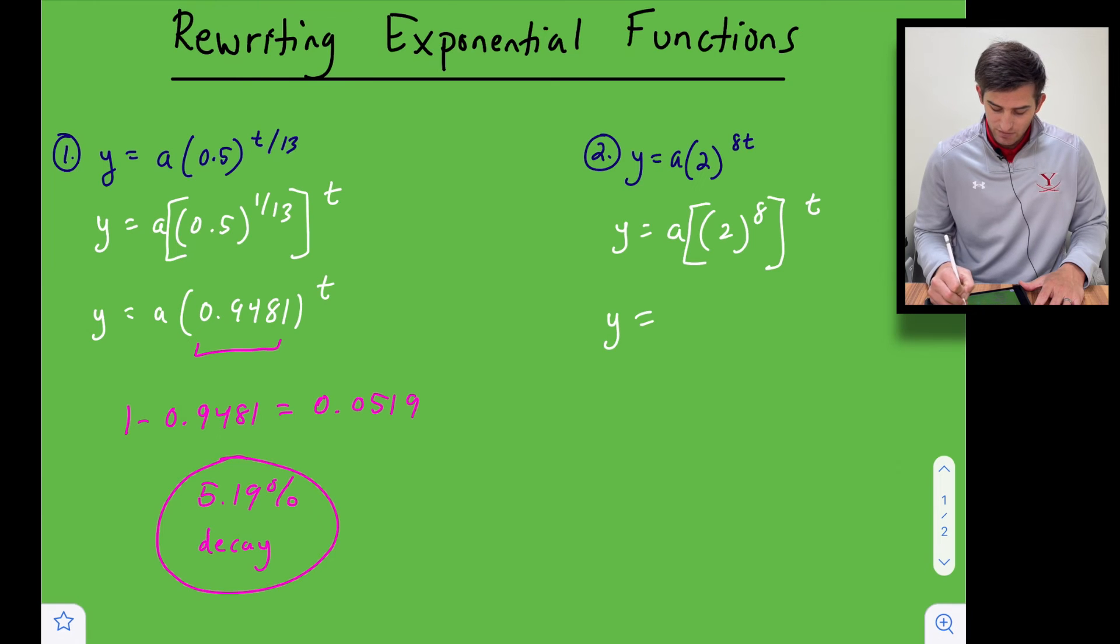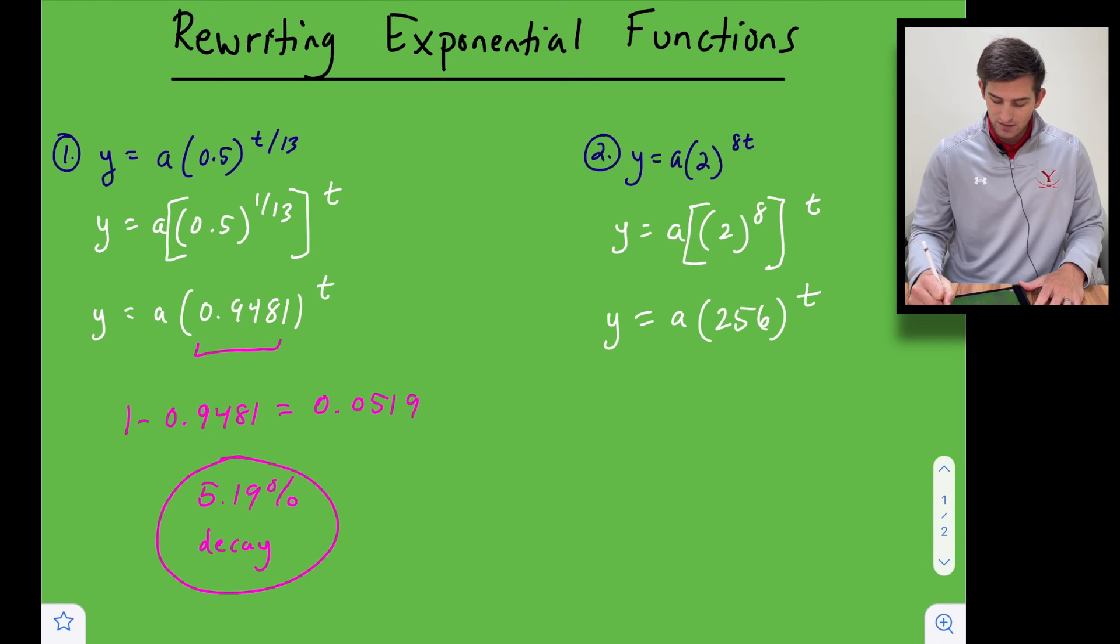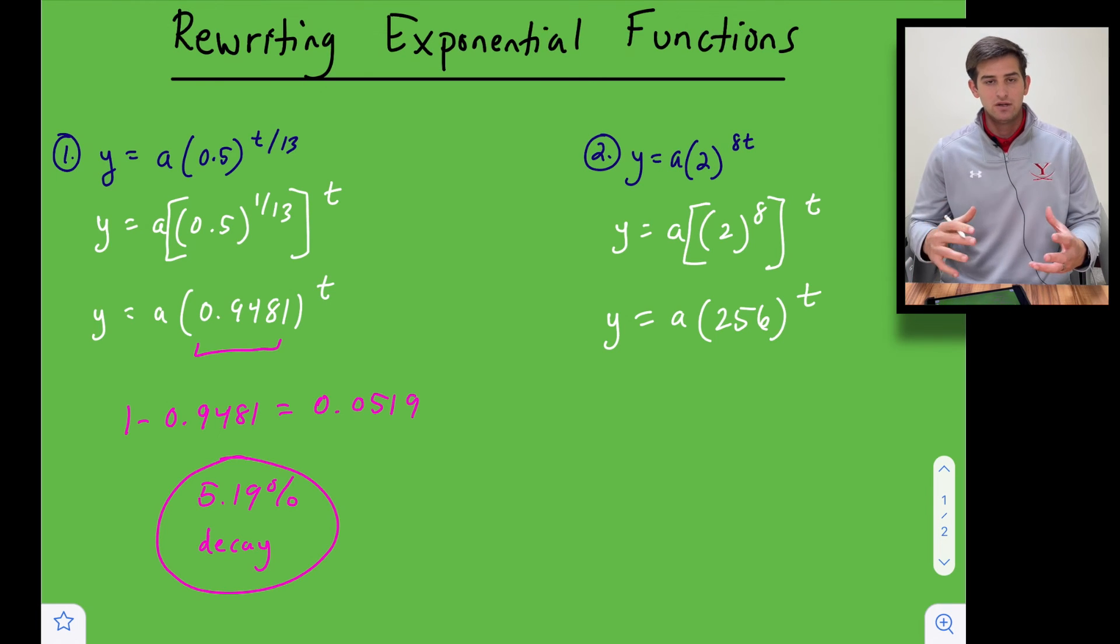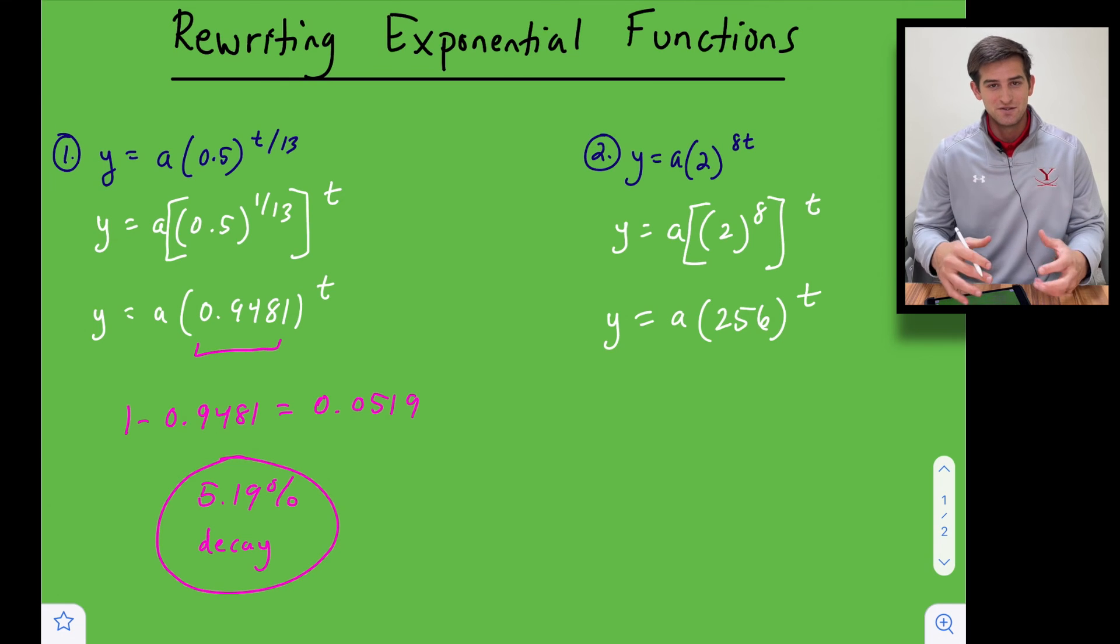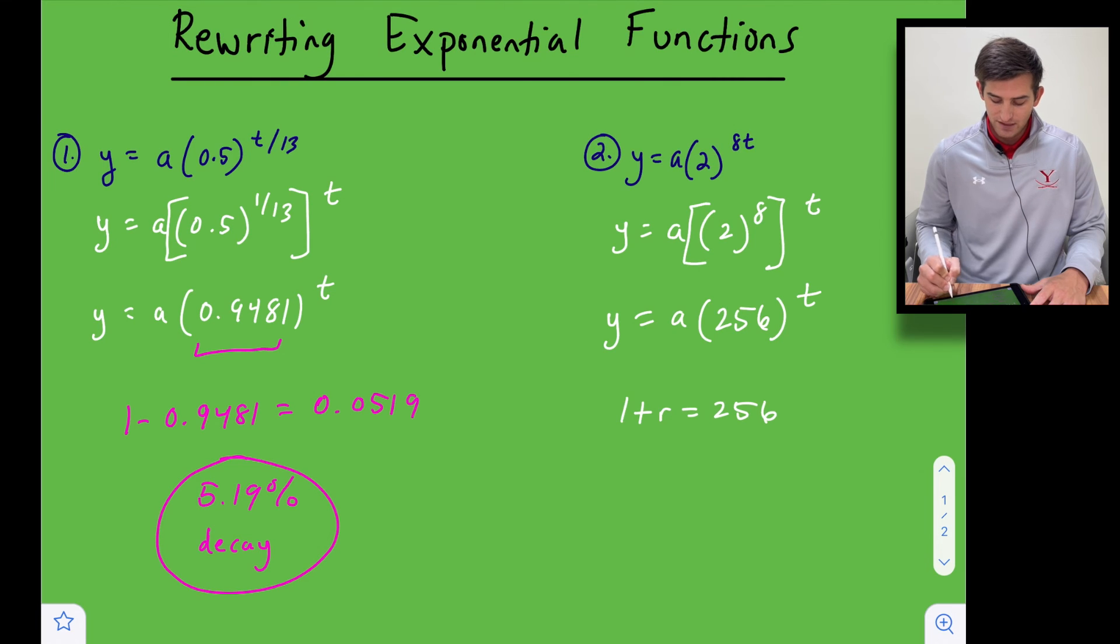So now we can simplify this to y equals a times 256 because two to the 8th power would be 256 to the t. So that would be our exponential function once we've simplified it. And so now we see okay that number is 256, that is a lot larger than one, so this was exponential growth. So essentially we had one plus r and that gave us 256, so basically what did we add to one to get 256? Well we added 255 right.